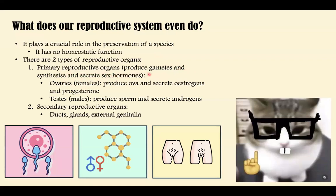We have primary reproductive organs which produce the gametes and synthesize and secrete sex hormones — like estrogens and androgens like testosterone. The primary reproductive organs are the gonads. In females, the gonads are the ovaries, which produce ova and secrete estrogen and progesterone. The testes, which are the gonads in males, produce sperm and secrete androgens. We also have secondary reproductive organs such as ducts, glands, and external genitalia, which facilitate reproduction by secreting fluids or serving as pathways for sperm and ova to travel.